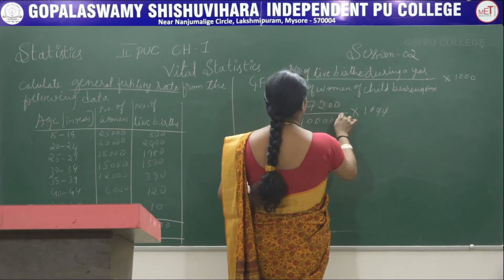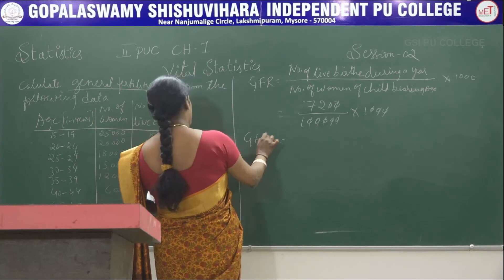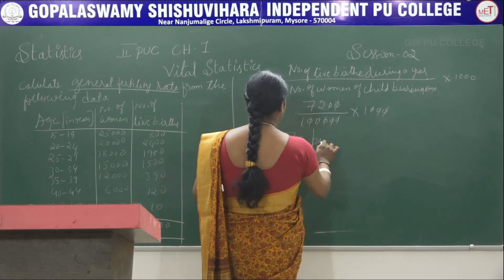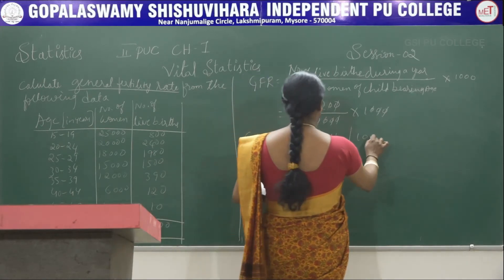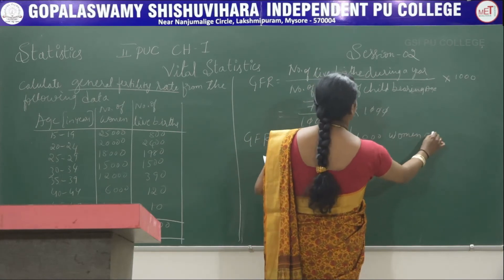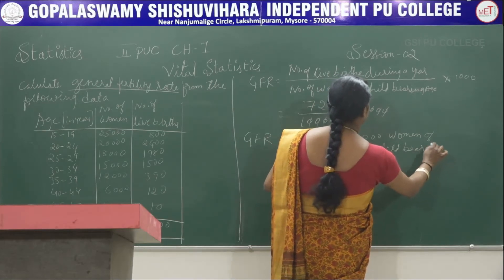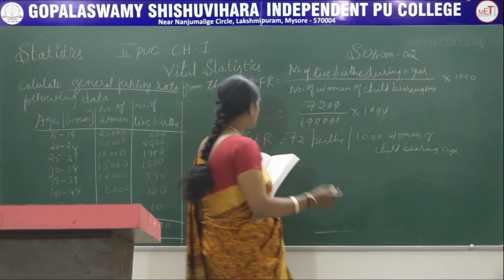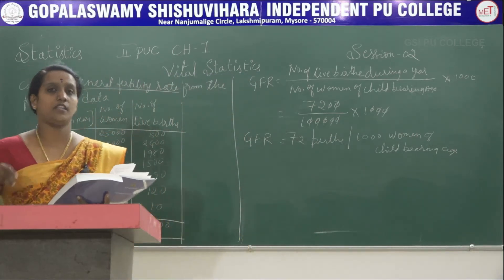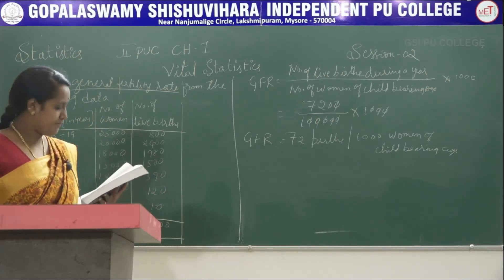Multiplying by 1000 and simplifying, the GFR is 72 births per 1000 women of childbearing age. So for every 1000 women of childbearing age, there are 72 births.